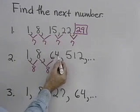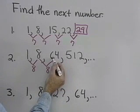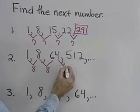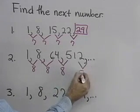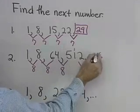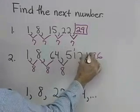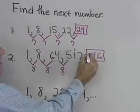8 times 64: 8 times 4 is 32, 8 times 6 is 48, and 3 is 51. So again, multiplying by 8 gives me this term. So I'll multiply by 8 again and get 8 times 2 is 16, 8 and 1 is 9, and 8 times 5 is 40. 4096 will be the next term in this sequence.